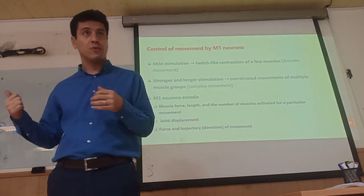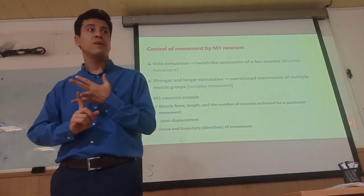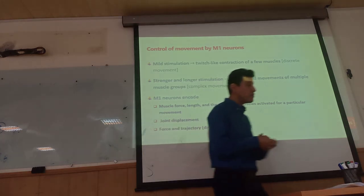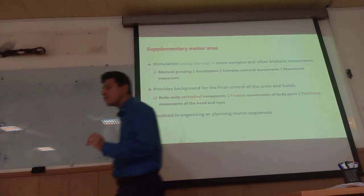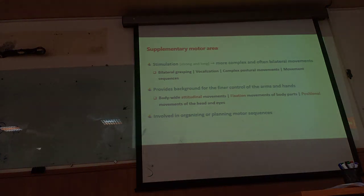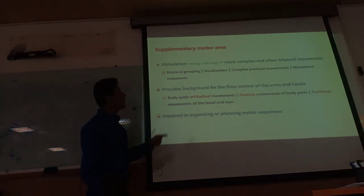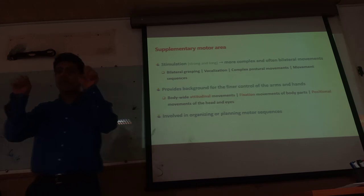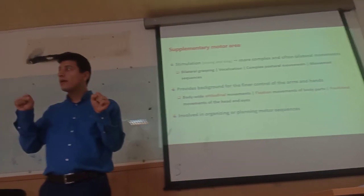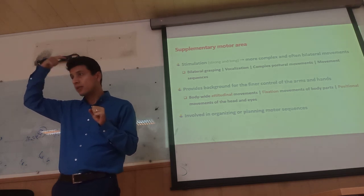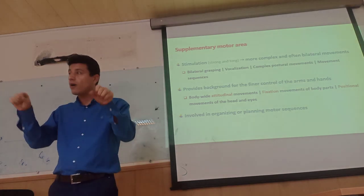Direction, force of the movement — everything is controlled by the primary motor cortex. But the supplementary motor area is very important for complex and positional movements. Stimulation in the supplementary motor area causes more complex and bilateral movements. Stimulating only the right side of the supplementary motor area activates both arms — it's not contralateral movement, it's bilateral.